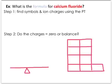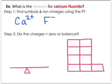Let's go through another example. The question asks: what is the formula for calcium fluoride? Step one is to find the symbols on the periodic table and list their ion charge. Calcium has a charge of plus two, and fluorine has a charge of negative one. The next step is to ask: do the charges equal zero or are they balanced? The answer is no, so I need to use one of my methods — the teeter-totter or table method — to balance them. I'll use both so you can choose which makes most sense for you.